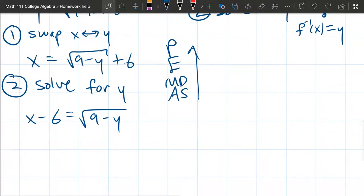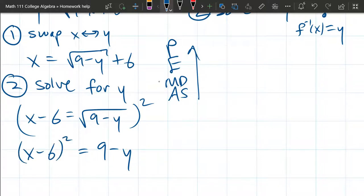Alright, next we're gonna get rid of this square root right here. How do we get rid of the square root? We're gonna square both sides. So on the right side you just cancel the square root. Now on the left side you have to square the entire left side. You don't get to square one and then the other term. So you have the whole thing x minus six squared like that.